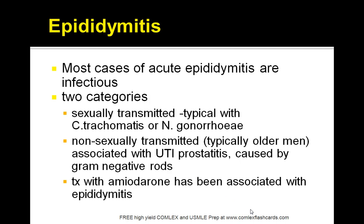There are mainly two categories of cases associated with acute epididymitis. They are either sexually transmitted, typically with Chlamydia trachomatis or Neisseria gonorrhoeae, or non-sexually transmitted in older men, typically associated with UTI or prostatitis caused by gram-negative rods. Also, patients who have been treated with amiodarone have been associated with epididymitis.